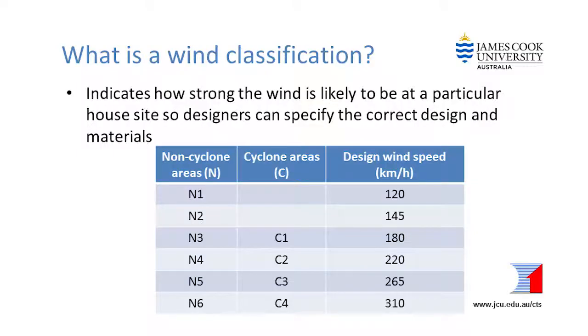If a severe storm passes over a town or suburb, the wind speed around houses built on hilltops will be higher than those in more sheltered locations on flat land surrounded by many other houses. The wind classifications reflect these differences in wind speed.